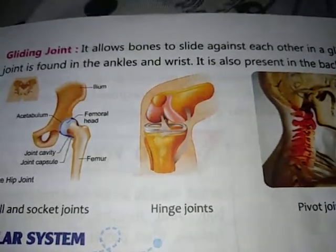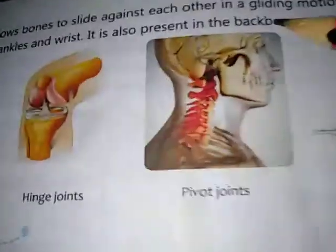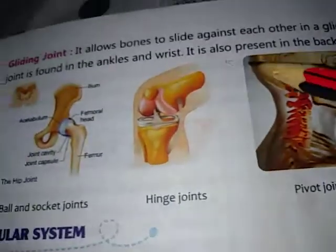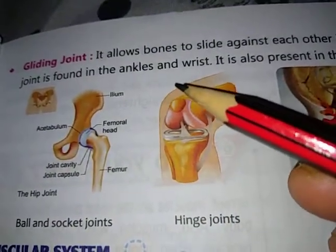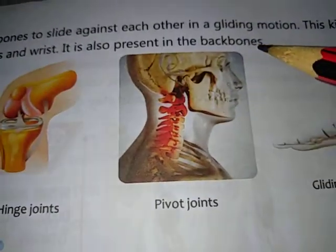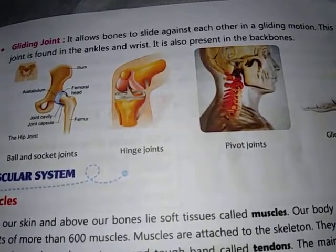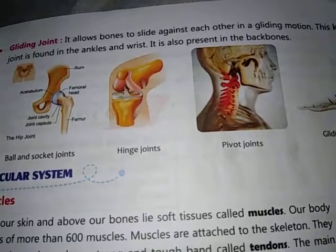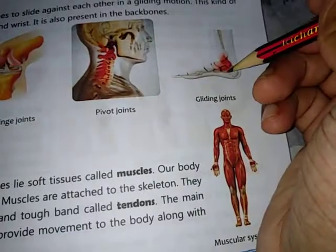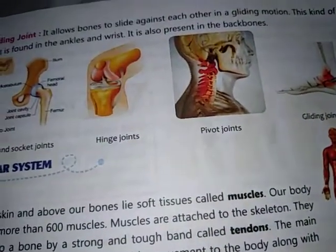Next is the gliding joint. It allows bones to slide against each other in a gliding motion. This kind of joint is found in the ankle and wrist. It is also present in the backbones, allowing two bones to slide on each other.